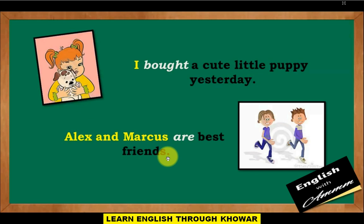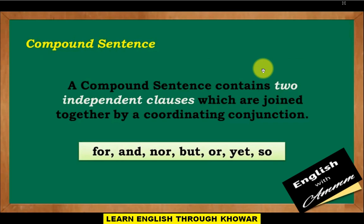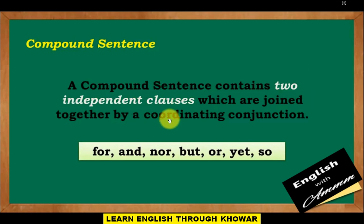Compound sentence: A compound sentence contains two independent clauses which are joined together by a coordinating conjunction, or connecting conjunction. The coordinating conjunctions are: for, and, nor, but, or, yet, so.